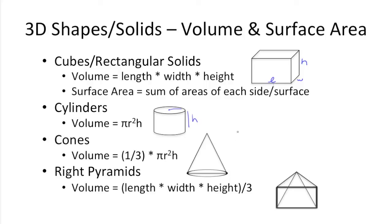For cones, volume is calculated by taking one-third times pi r squared h. So it's just the formula for the volume of a cylinder times one-third. The radius for the cone is down here, represented at the base, and the height is just from the vertex to the center point in the circle at the base.